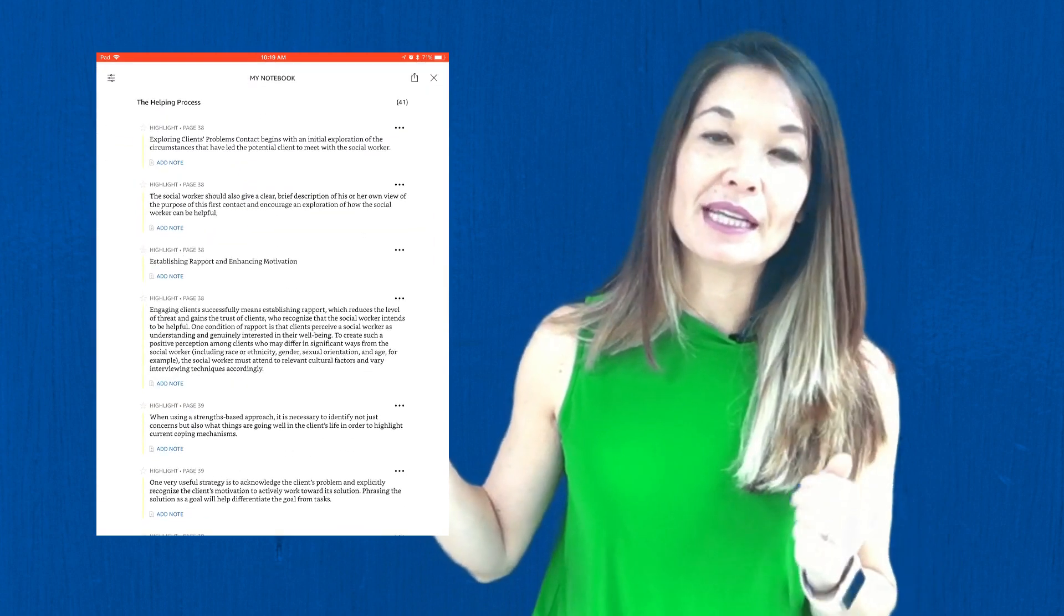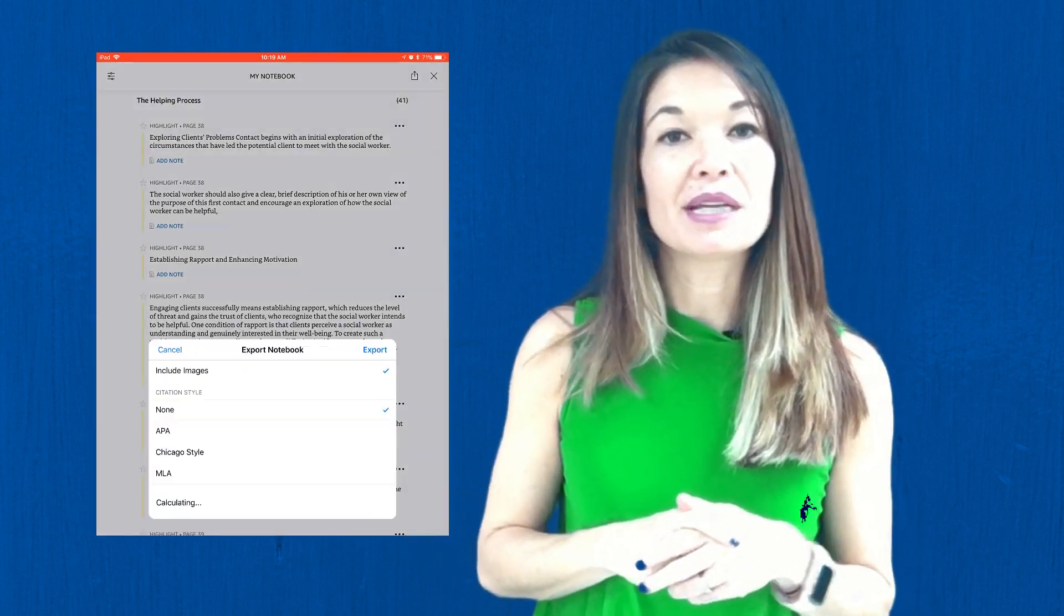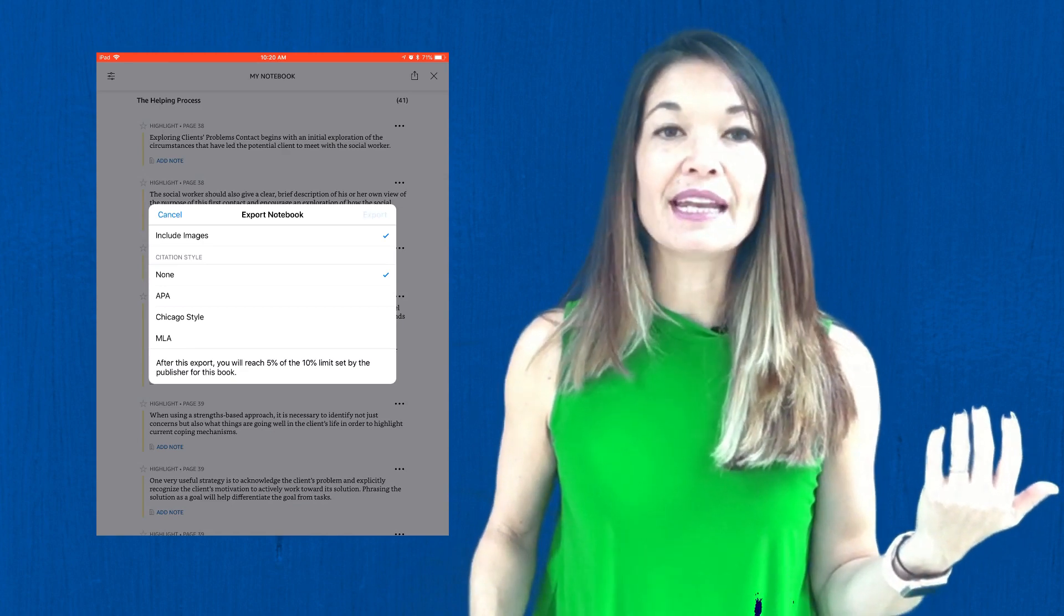From the Kindle app hit this button at the top to see all of your highlights then hit the share button. Choose email, pick a citation style if you want to, and hit export.